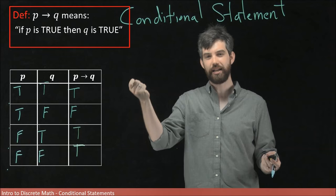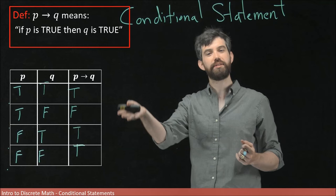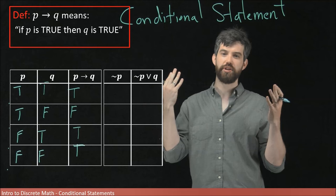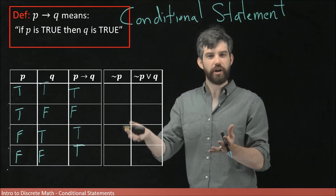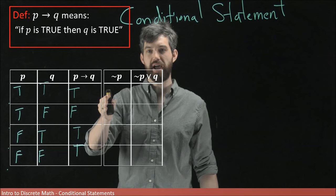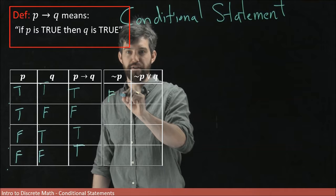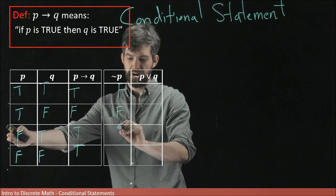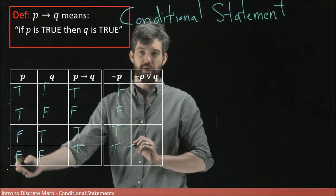To make a bit more sense of this, I'm going to add a couple of columns to the truth table: not P and the statement not P or Q. For the not P column, it's just the negation of P: false, false, true, true — since P is true, true, false, false respectively.